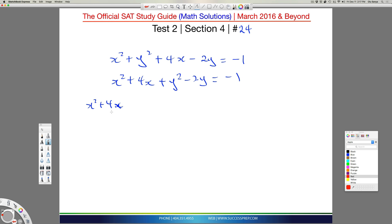So half it, divide it by 2, which is going to give you 2, and then square that number, which is going to be 4, and then add that 4 at the end here. So that's the way you complete this x squared piece.